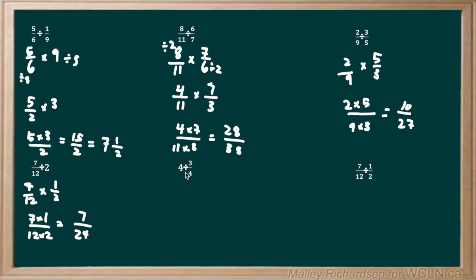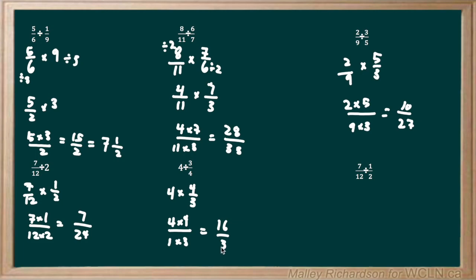Our next example is 4 divided by 3 over 4. To turn this into a multiplication problem, we take the reciprocal of 3 over 4. So we have 4 times the reciprocal of 3 over 4, which is 4 over 3. Nothing can be reduced down, so we have 4 times 4 over 1 times 3, and our final answer is 16 over 3.